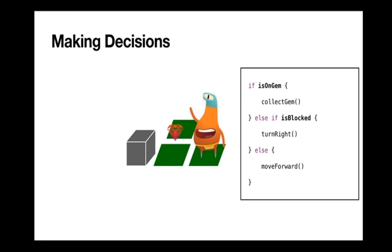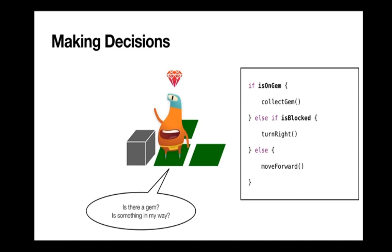When our code runs, we step forward and ask: is there a gem? Is there something in my way? We look at isOnGem — if that's true, we run the code inside that first condition. If it's not, we go to else if isBlocked and ask, are we blocked? If we are, we run that code. If we're not, we look at the else section — the otherwise case — where none of the other things were true, so we move forward.